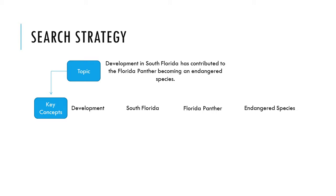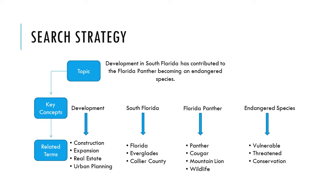Now we want to find some related terms for those concepts. For example, you could change out development with construction, expansion, real estate, or urban planning, among many others. Most databases have a thesaurus that you can use to figure out which words are in its vocabulary, but simply thinking about words that are similar or related will often do the trick. Having this list will help you switch terms out if you get too many or too few results.